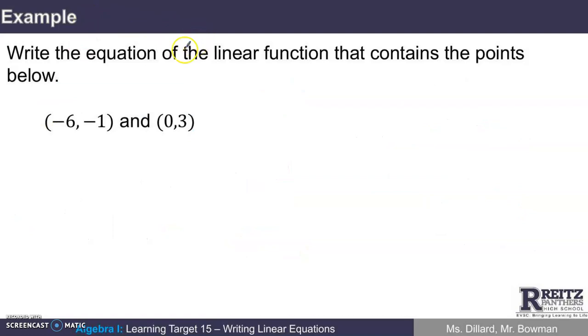Here's another example. Write the line equation of the linear function that contains these two points. I need the slope, so I'll make a quick little table. Negative 6, negative 1 as one ordered pair, and 0, 3 as another ordered pair. The change in x, from negative 6 to 0, I need to add 6. The change in y, from negative 1 to 3, I need to add 4.